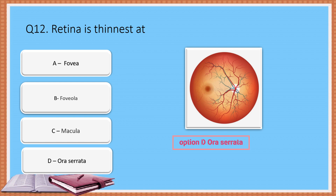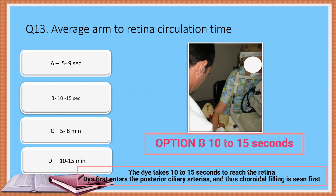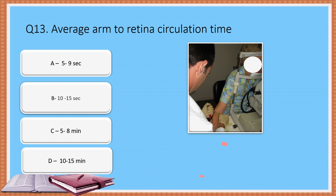Next question: What is the average arm-to-retina circulation time? Option A: 5–9 seconds. Option B: 10–15 seconds. Option C: 5–8 minutes. Option D: 10–15 minutes. The correct answer is Option B: 10–15 seconds. The dye takes 10–15 seconds to reach the retina after being injected into the arm. It first enters the posterior ciliary arteries, and thus choroidal filling is seen first in the choroidal phase of FFA.